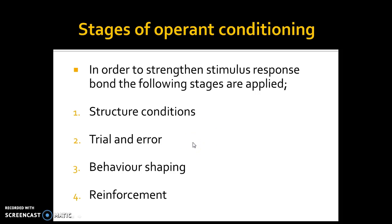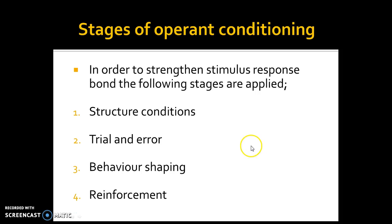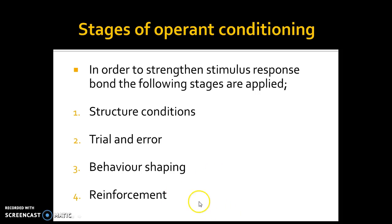Trial and error is a period where you have lots of attempts and try to learn from your mistakes. If you hit the ball and it goes miles outside the hoop, that's an error — then you'll try again. By seeing the errors and using the mistakes, you can fine-tune your smash to get it closer. When you start to get more successes than errors, that is called shaping of behaviour. When shaping takes place, it's important that a coach provides positive reinforcement, negative reinforcement, or punishment to strengthen the SR bond.